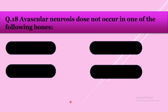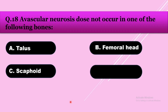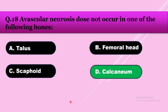Question number eighteen: Avascular necrosis does not occur in which of the following bones? Option A: talus, option B: femoral head, option C: scaphoid, option D: calcaneus. The answer is calcaneus. Avascular necrosis is commonly seen in scaphoid fracture, femoral head fracture, and talus fracture.